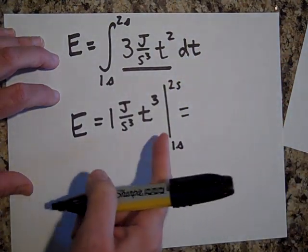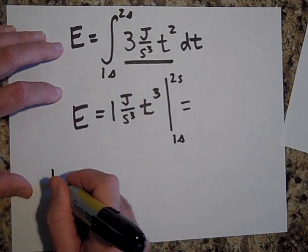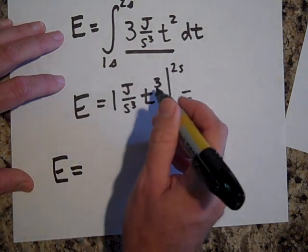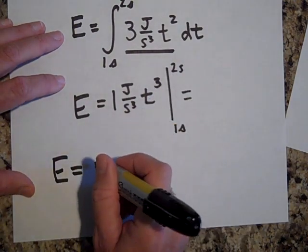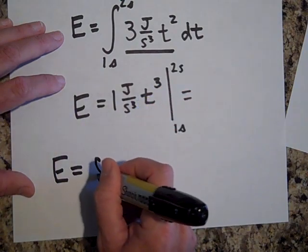So when I plug into this, I first put in the two. This could be work done as well. When I plug in two, that's going to give me eight, so that's eight seconds cubed, so that's going to be eight joules.